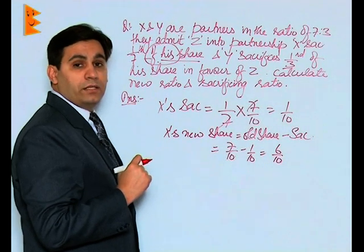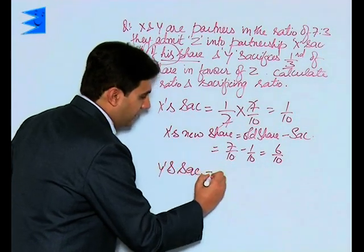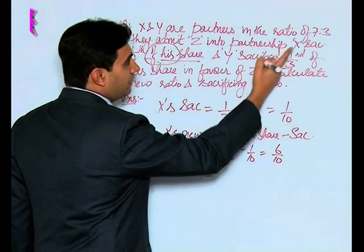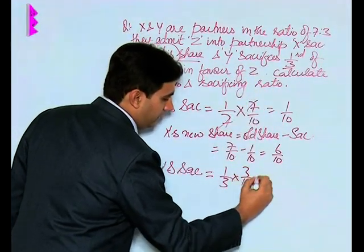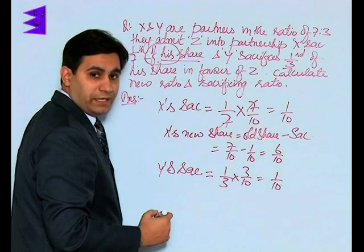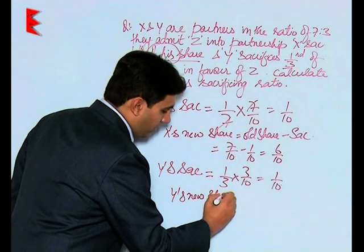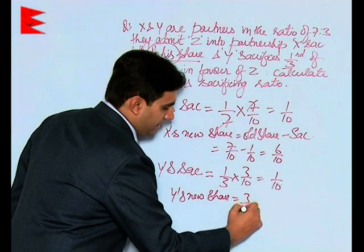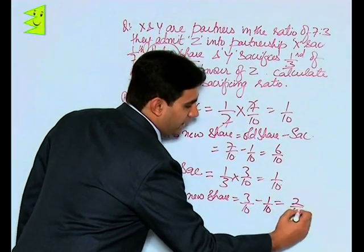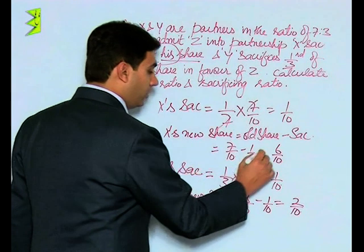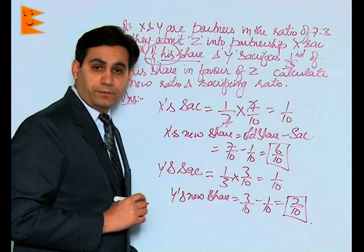In a similar manner, we can calculate Y's sacrifice. Y's sacrifice is equal to 1/3rd of his share — that is 1/3 multiplied by 3/10th — which gives 1/10th. So Y's new share would be the old share of Y, which is 3/10th, minus the sacrifice of Y, which is 1/10th, giving us 2/10th. So the new share of X is 6/10th and the new share of Y is 2/10th.